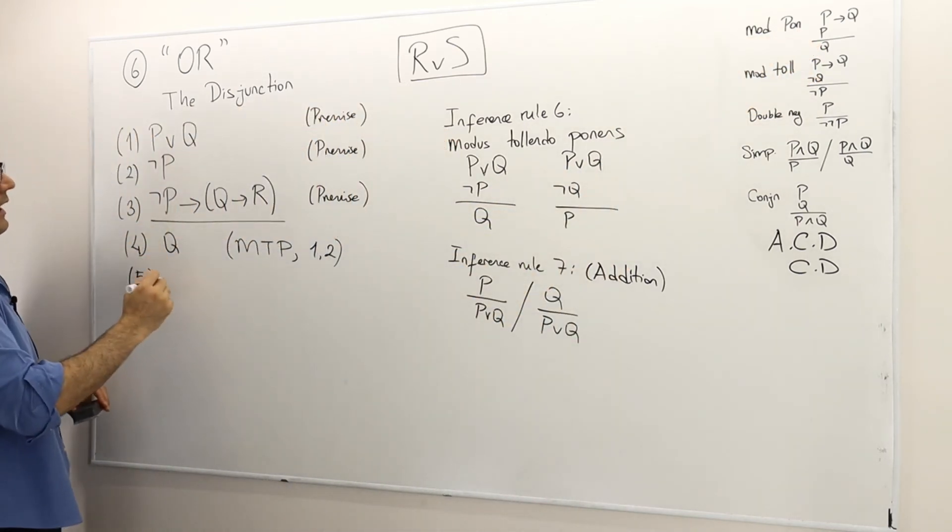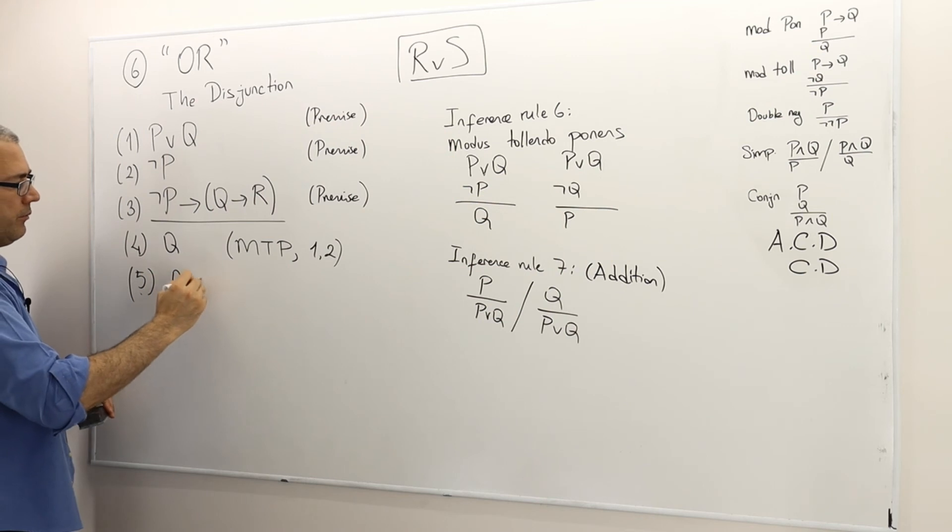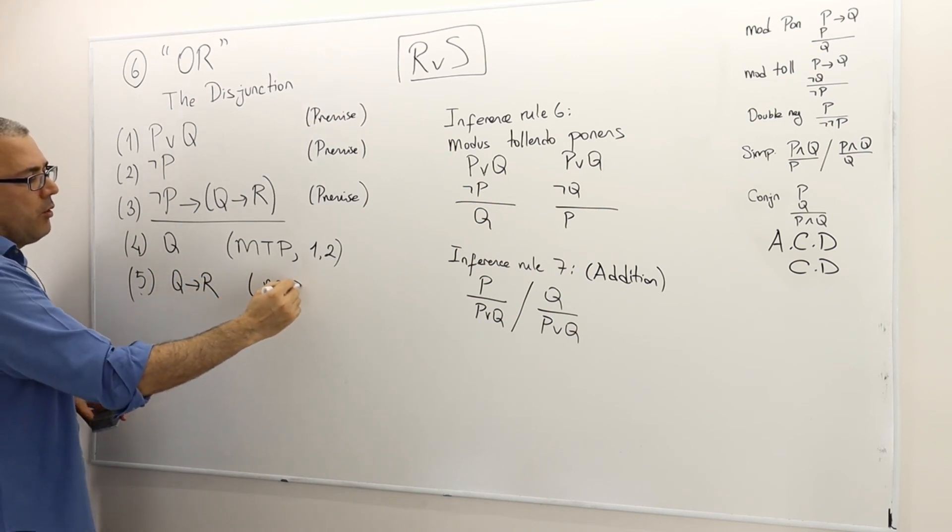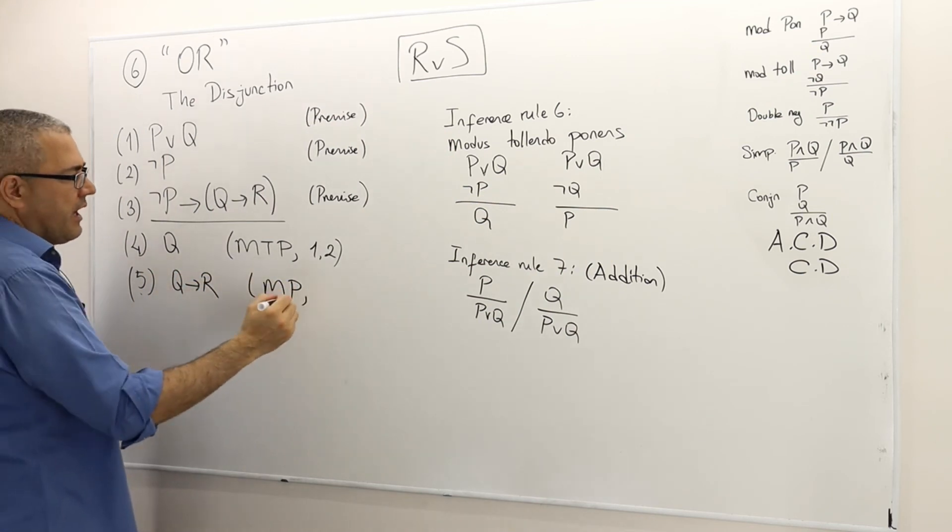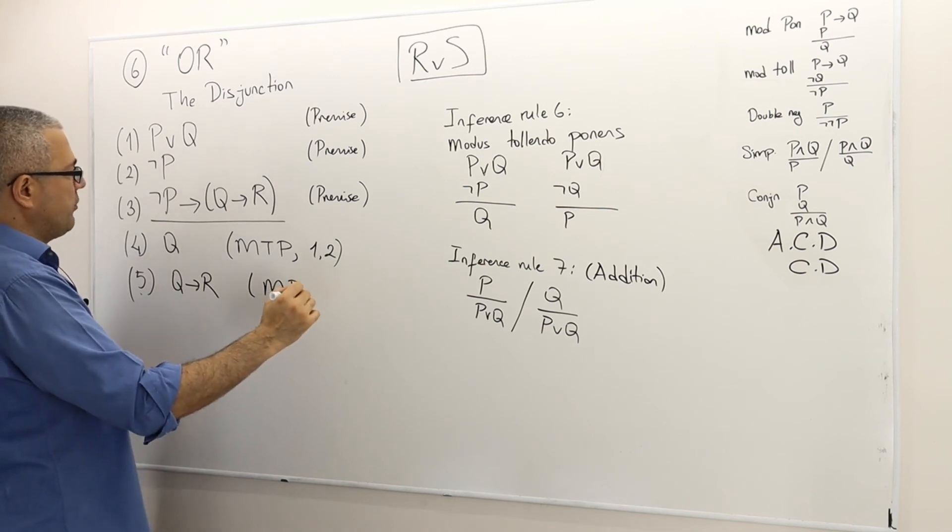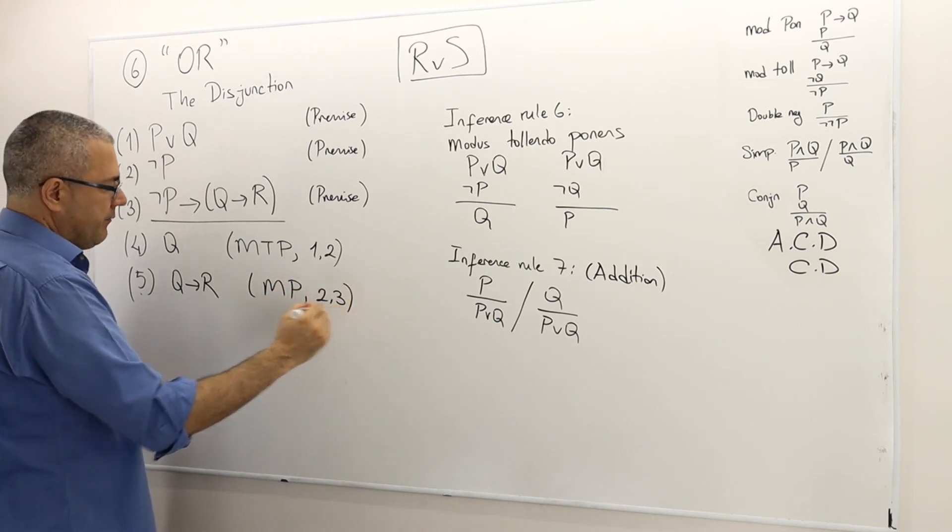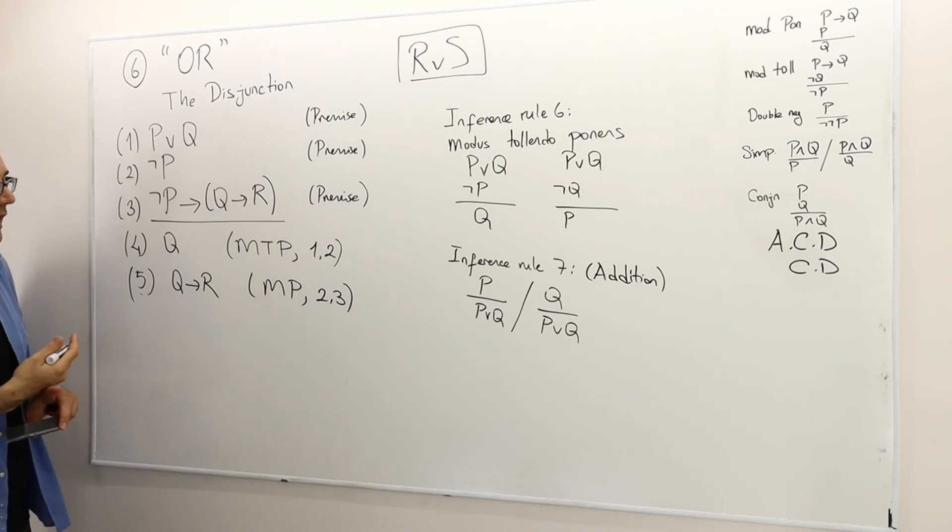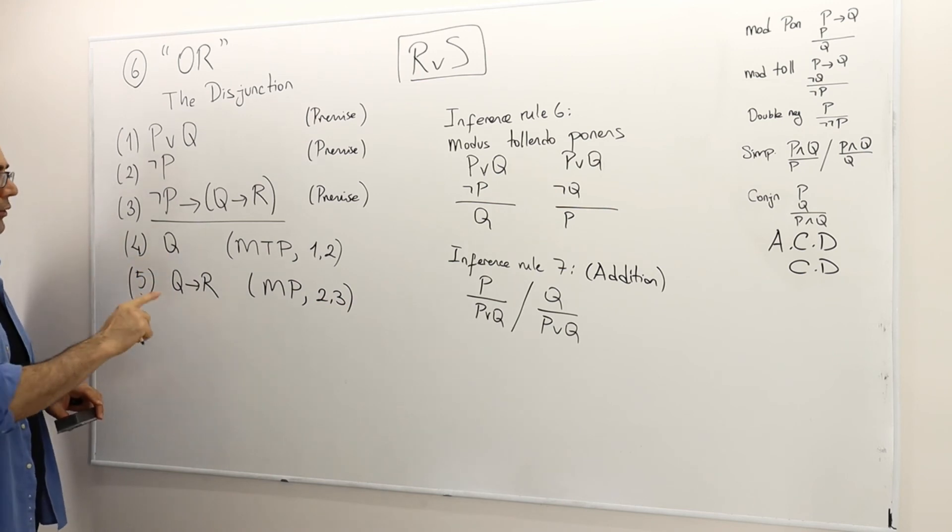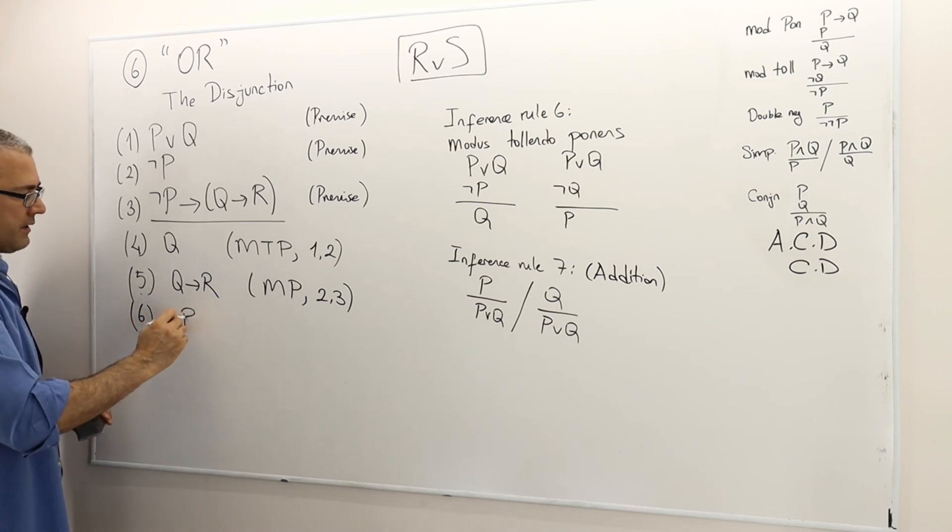Very well, what else? Now I can use the Q. So I have Q true, Q implies R true. Once again, I can employ the modus ponens rule. I must have R true. So modus ponens between the arguments four and five.